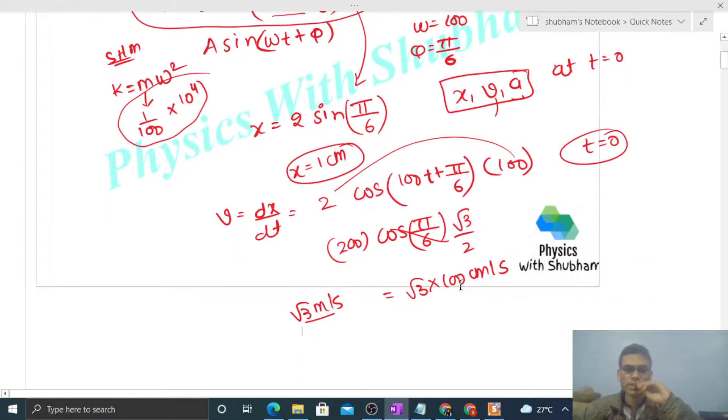For acceleration, either you can find dv/dt—the acceleration function—then put t = 0, or you can directly write acceleration is minus ω² times x. Because we know the value of omega is 100, this will be 10⁴.